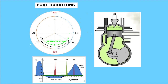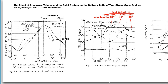At low RPM, the end of transfer flow can happen at bottom dead center. As RPMs increase, the time allowed for that flow to happen is less, so the angle is more — it winds up happening after BDC. As the RPM goes up, it happens later and later after bottom dead center.